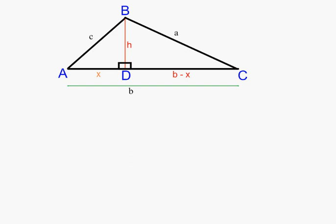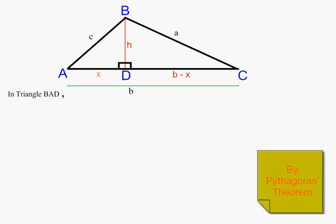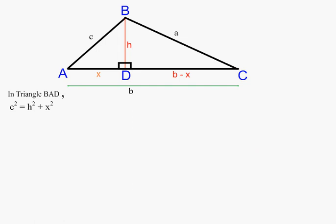Let's focus on triangle BAD. By Pythagoras's theorem, c squared equals h squared plus x squared, and rearranging the formula gives us h squared equals c squared minus x squared. That's one identity that we'll keep, and I've highlighted it in red because we're going to use it again.